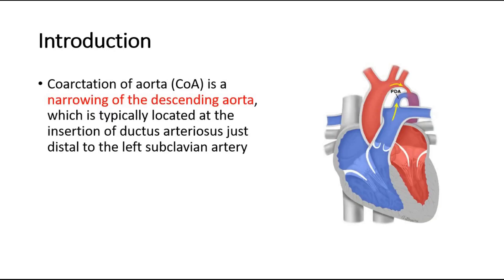Coarctation of the aorta, COA, is the narrowing of the descending aorta. The descending aorta is shown here in red, which is typically located at the insertion of the ductus arteriosus, just distal to the left subclavian artery.